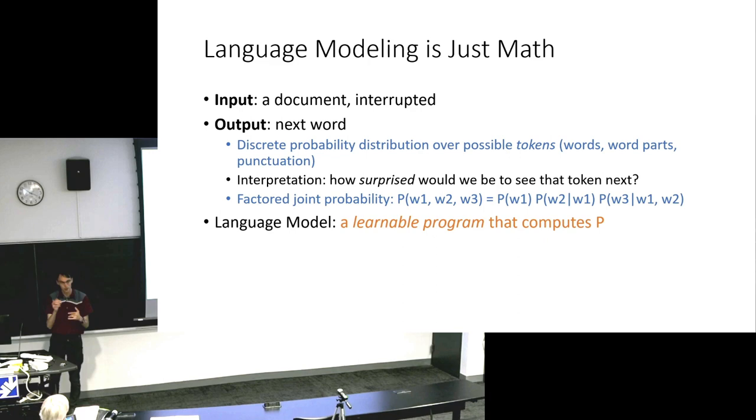But in the end, it's just math. We give it a document, interrupted part way through. Output, next word. So you just repeatedly try to predict every word in a document. And then uncover one more word, predict the next one. In blue, I give the technical details. Basically, we're giving a discrete probability distribution over possible tokens, which could be words, or partial words, or punctuation or characters. And the output is, for all possible words, all possible next tokens, how surprised would we be by that being the next token?